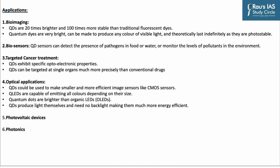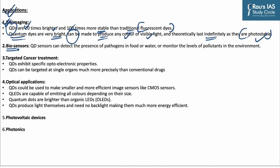Let us look at the applications of quantum dots. The first is bio-imaging: quantum dots are considered superior to traditional organic dyes and can be used in bio-imaging, as they are 20 times brighter and 100 times more stable than traditional fluorescent dyes. They can produce any color of visible light and theoretically last indefinitely as they are photo-stable. The second application is biosensors: quantum dot sensors can detect the presence of pathogens in food and water, or monitor levels of pollutants in the environment.